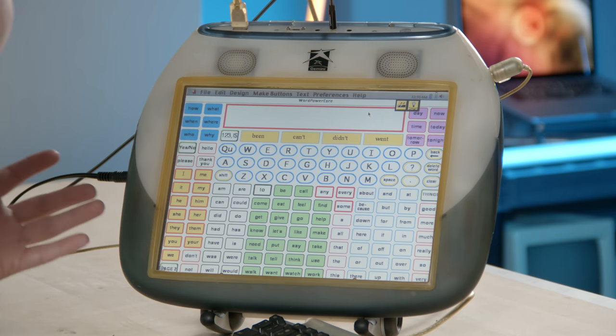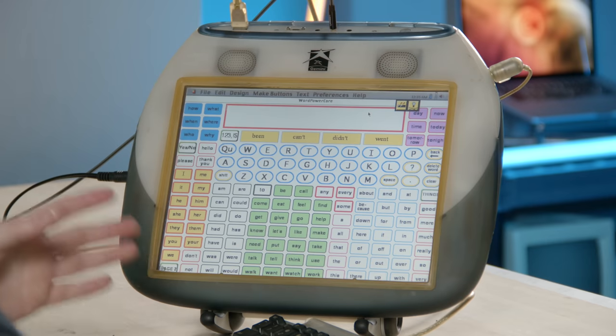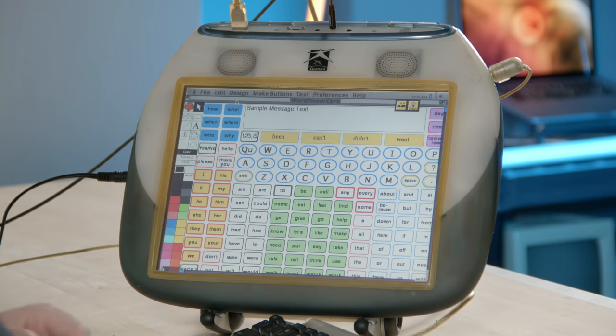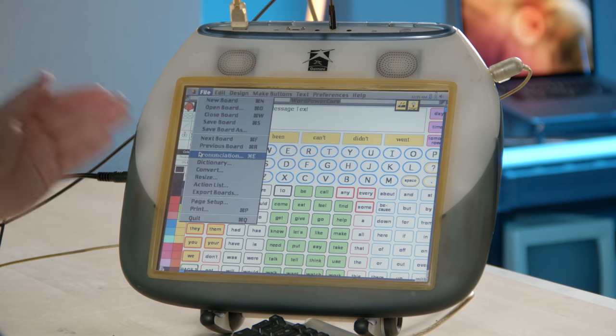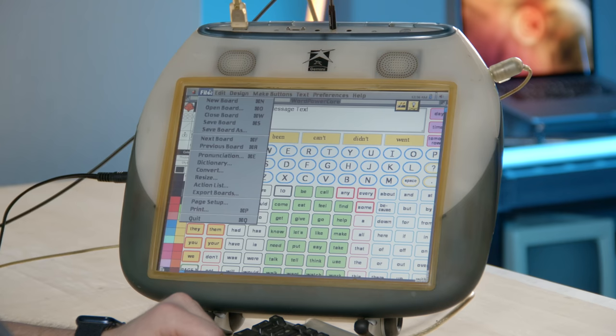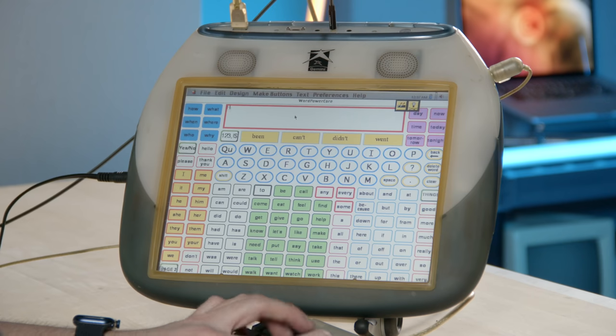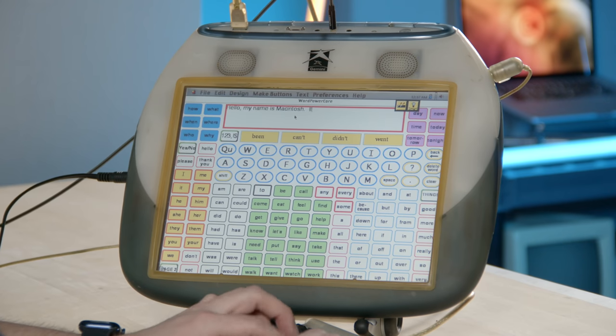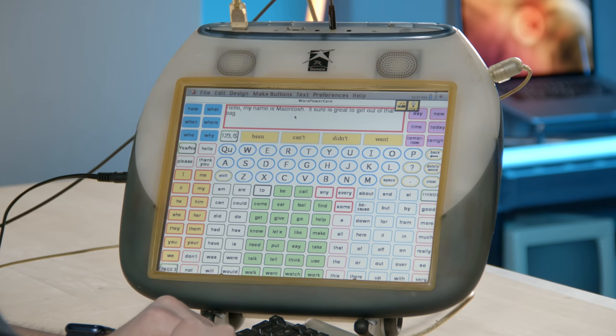One of the more important bundled applications with the Gemini book is Speaking Dynamically Pro. This application allows you to communicate. You can use the computer's voice and make sentences either by typing or by using these buttons. And you can customize all of this stuff. There's even a lot of other menus in here, like for dictionaries and pronunciation. So we'll exit out of the design mode, go back to use, and we'll start with some typing. We have predictive text here, kind of like what you can get on your iPhone. Hello, my name is Macintosh. It sure is great to get out of that bag. So that's one way you can do it.